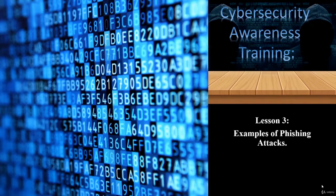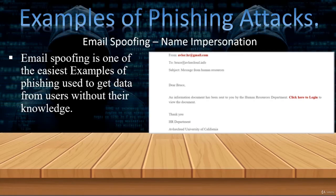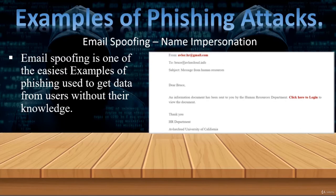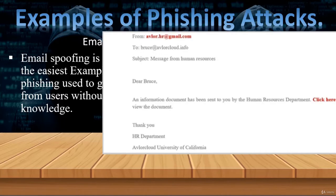Cybersecurity Awareness Training. Welcome to Lesson 3, where we will explore examples of phishing attacks and how to spot them. Email spoofing or name impersonation is the method used in traditional phishing — making an email appear to come from someone the recipient knows or a company they do business with. Most would click the link, possibly compromising their computer or network. You should also notice that an email from HR coming from a Gmail account is a red flag.